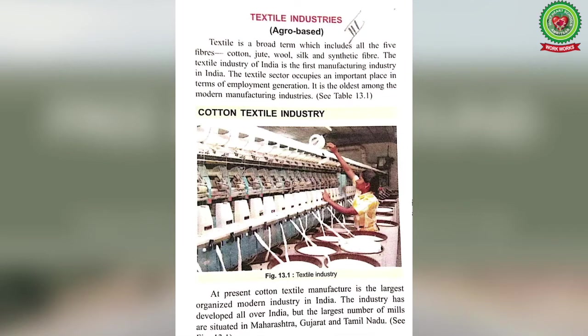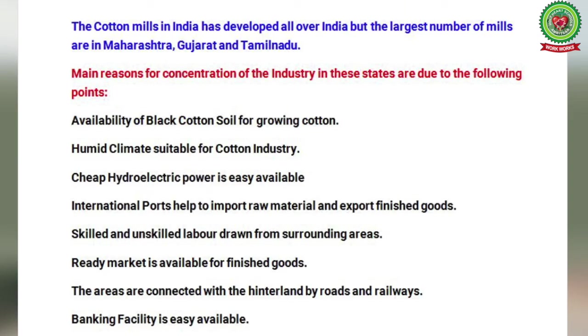Cotton textile industries: at present, cotton textile manufacturing is the largest organized modern industry in India. The industry has developed all over India, but the largest number of mills are situated in Maharashtra, Gujarat, and Tamil Nadu. We will now see the main reasons for concentration of the industry in these states.